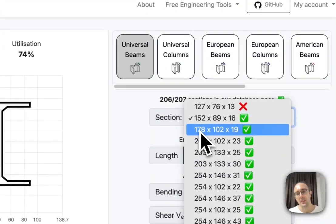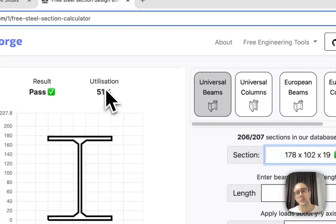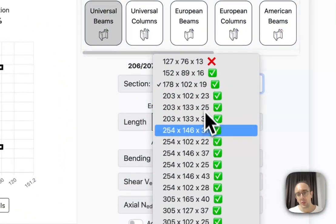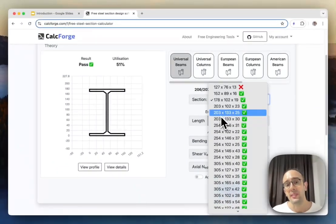If I increase again, so this is a bigger section, another bigger section than that, you'll see here it's now 51% utilized. So when you use bigger sections of steel, they have more strength and more ability to withstand whatever forces you're applying to it.